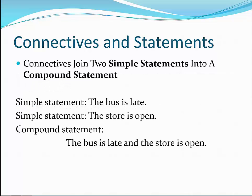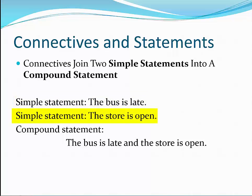Connectives join two simple statements into a compound statement. A simple statement is a statement that does not contain any other statements, and a compound statement is a statement that contains two or more statements. The bus is late is a simple statement. The store is open is another simple statement. If we join the two statements with a connective — for instance, the bus is late and the store is open — we've created a compound statement.